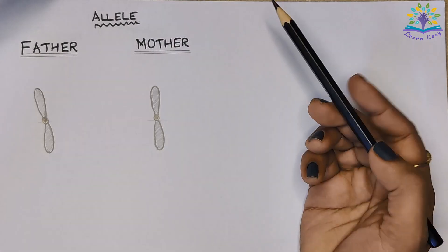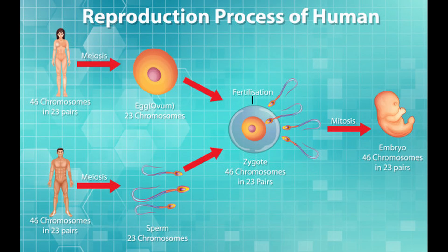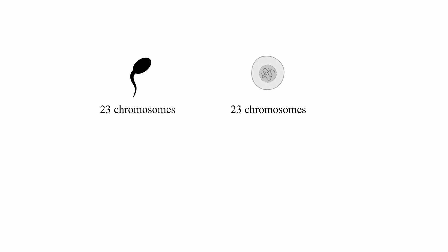In sexual reproduction, the child will be receiving features from both mother and father. For example, in humans, a zygote is formed by the fusion of sperm and ovum. Both sperm and ovum have 23 chromosomes each, which has the complete set of information about features and functions of the body.